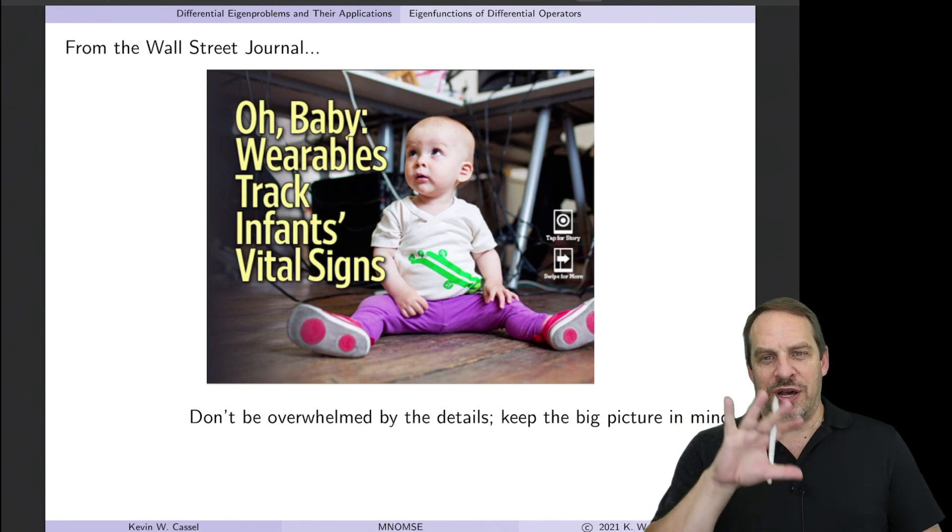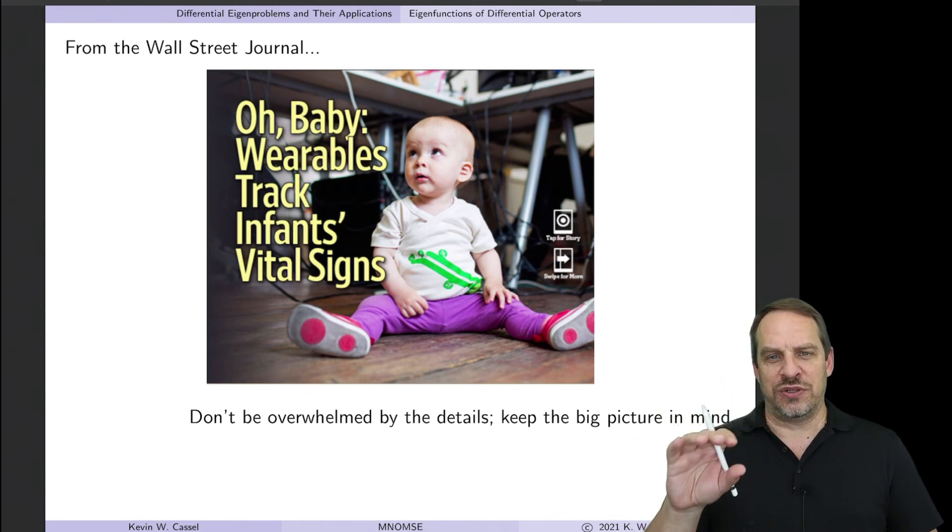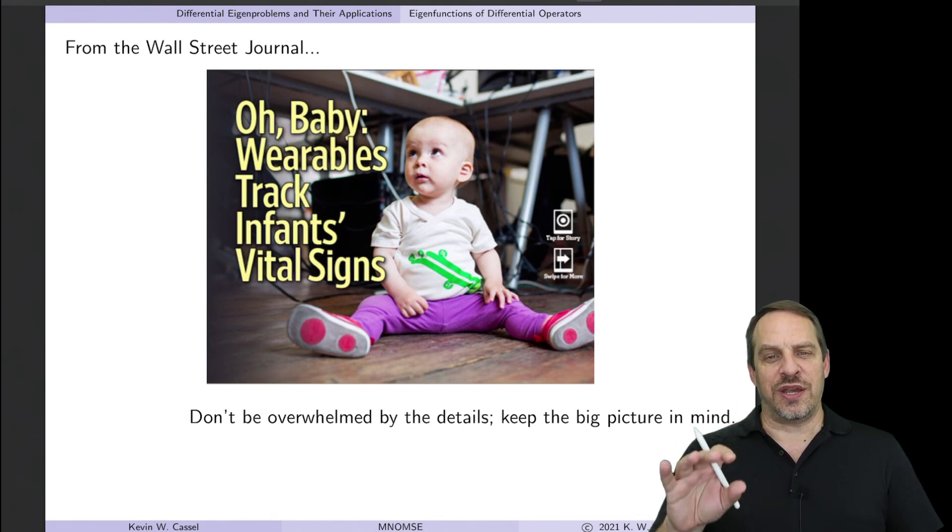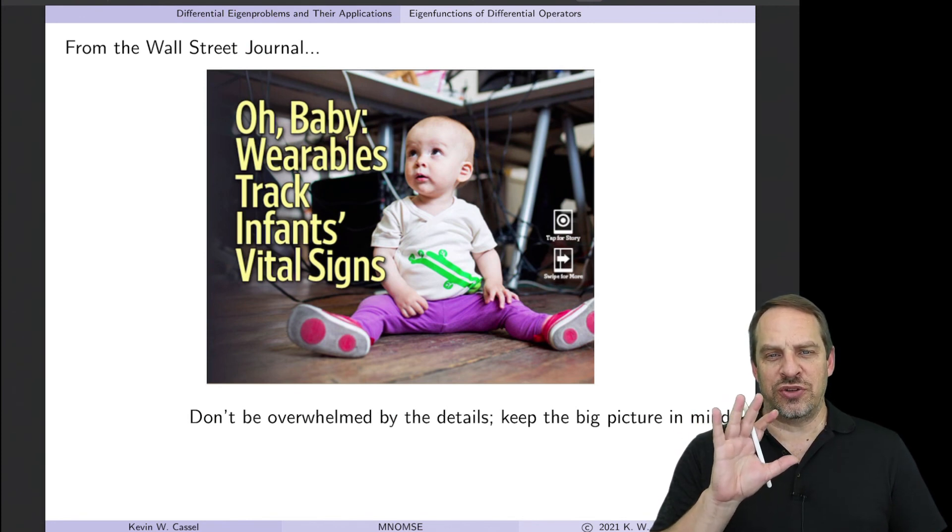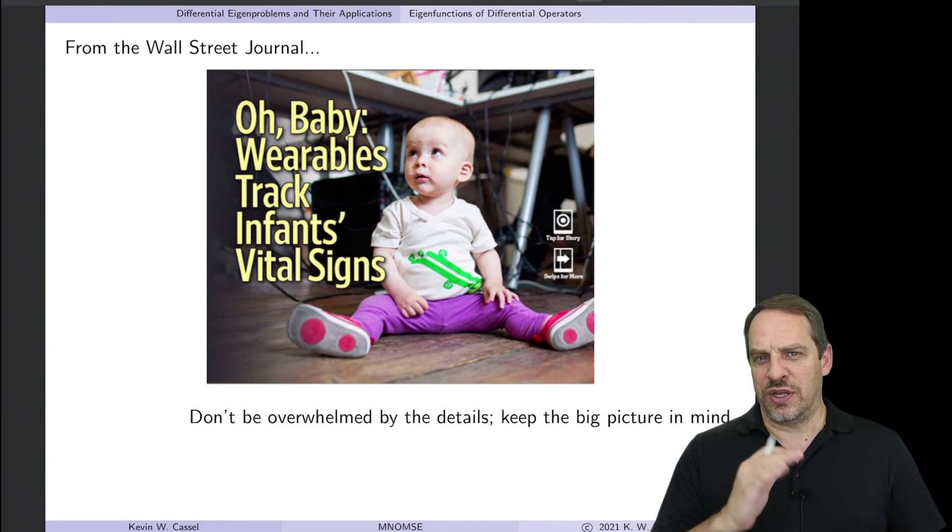So in that spirit, I'm going to look at an example to illustrate the basic approach how to get the eigenvalues and eigenfunctions. On the first pass through, focus on the big picture, the one, two, three, four steps, and don't get bogged down in the details. You can look at the details later and sort that out.